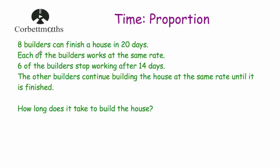Our next question says 8 builders can finish a house in 20 days, and each of the builders works at the same rate. But 6 of the builders stop working after 14 days, so there's only 2 builders left working on it. The other builders continue building the house at the same rate until it's finished, and we're asked how long it'll take for them to build the house.